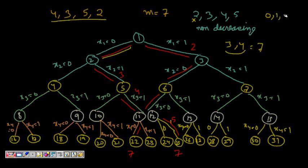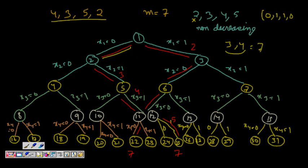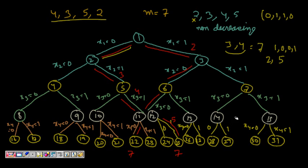That path can be represented as the vector 0,1,1,0. Another solution is x1=1 (choosing 2), x2=0, x3=0, x4=1 (choosing 5), represented as 1,0,0,1, which also sums to 7. There are a total of 2^n - 1 = 31 possibilities in the tree.